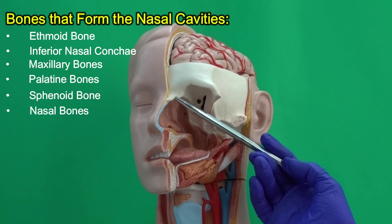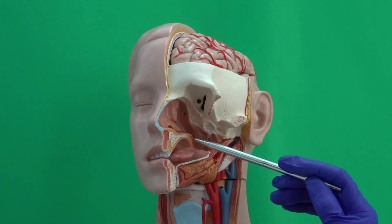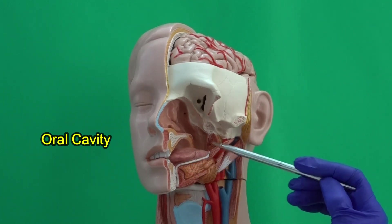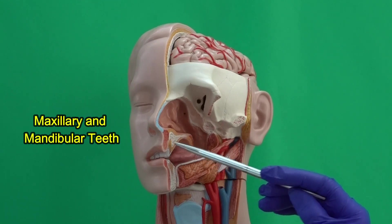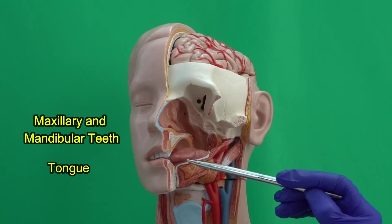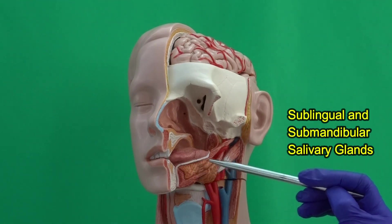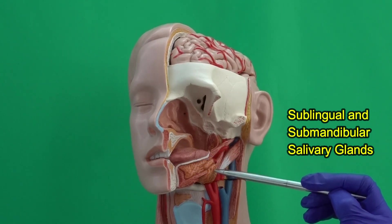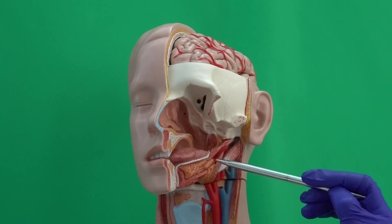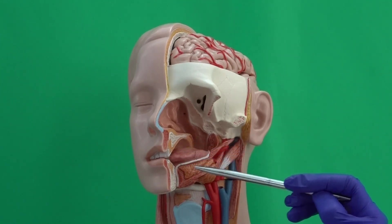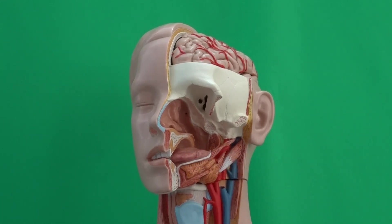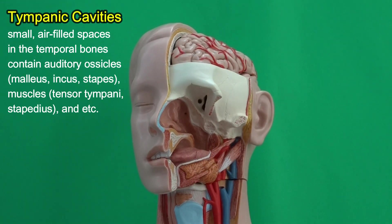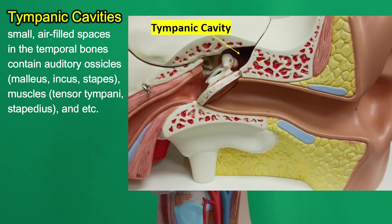Inside the oral cavity we have important structures including our maxillary and mandibular teeth and the tongue. In the mouth floor we find two pairs of salivary glands: the sublingual salivary gland and the submandibular salivary glands. We also have muscles and blood vessels. In this model we cannot get inside the tympanic cavities, but inside the tympanic cavities we do have some very small bones called ossicles and also some very small muscles.